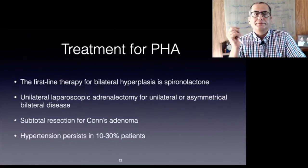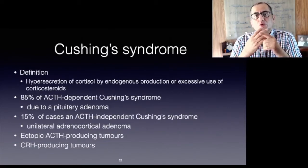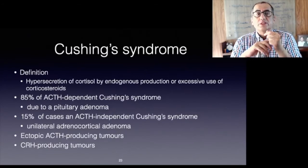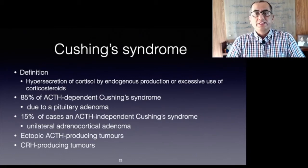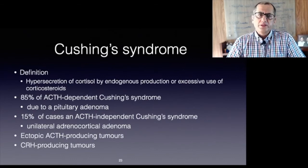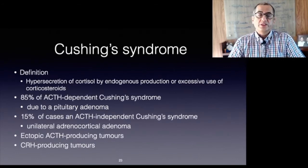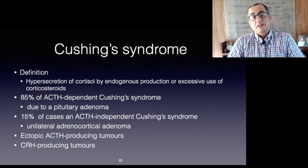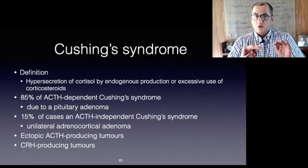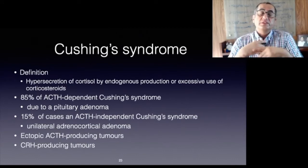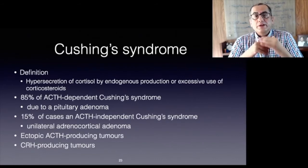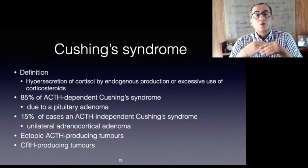Hypersecretion of cortisol caused by endogenous production or excessive use of corticosteroids is known as Cushing's syndrome. It can be ACTH-dependent or ACTH-independent. The most common cause — in 85 percent — of ACTH-dependent Cushing's syndrome is Cushing's disease, resulting from a pituitary adenoma secreting excessive ACTH. In about 15 percent, ACTH-independent Cushing's syndrome with low ACTH levels is caused by a unilateral adrenocortical adenoma. Bilateral macronodular or micronodular hyperplasia are rare causes.